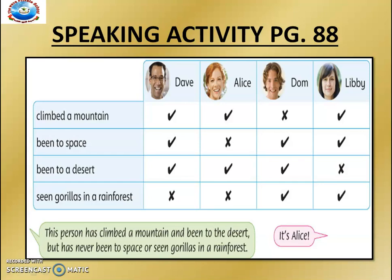Now for Alice: Alice has climbed a mountain and has been to a desert, but has never been to space or seen gorillas in a rainforest. Now for Dome: Dome has been to space and a desert and has also seen gorillas in a rainforest, but has never climbed a mountain. For the last one, Libby: Libby has climbed a mountain, been to space, and has seen a gorilla in a rainforest, but has never been to a desert.